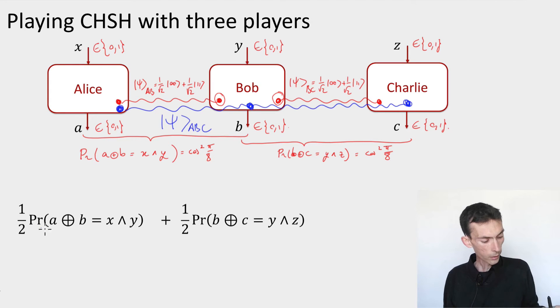That is, I am trying to maximize the probability that a plus b equals x and y plus the probability that b and c equal y and z, weighted by a half. As if I was playing the one game with probability half or the other game with probability half, without telling the players which game they're playing, but still providing their inputs and looking at their outputs.